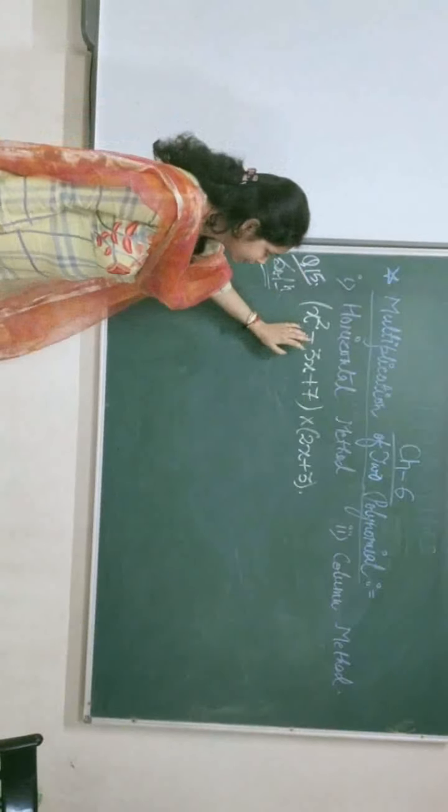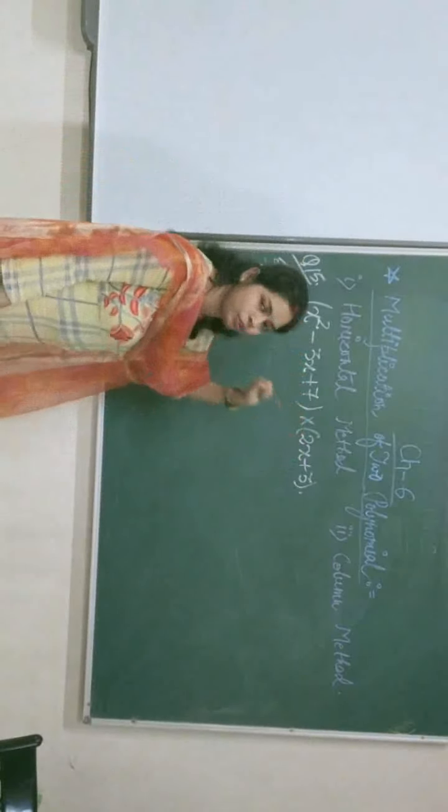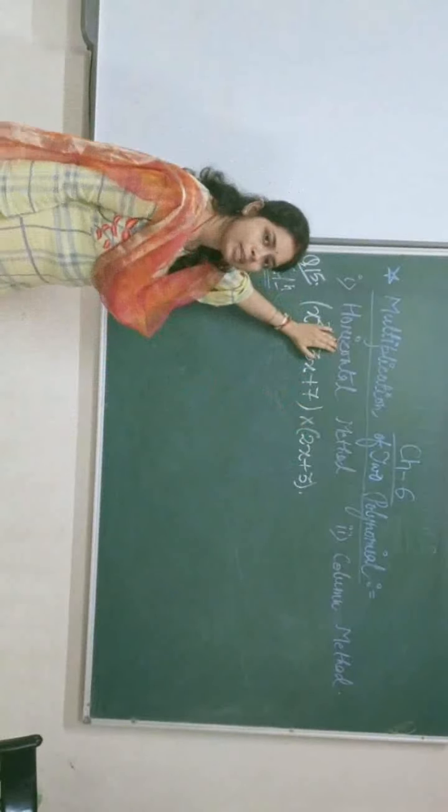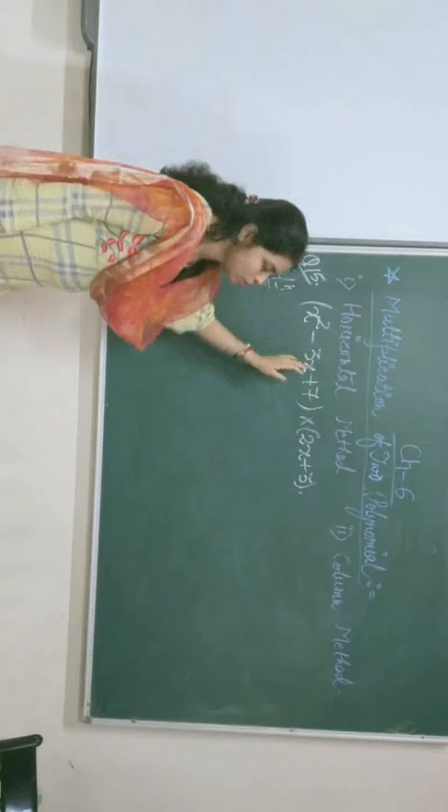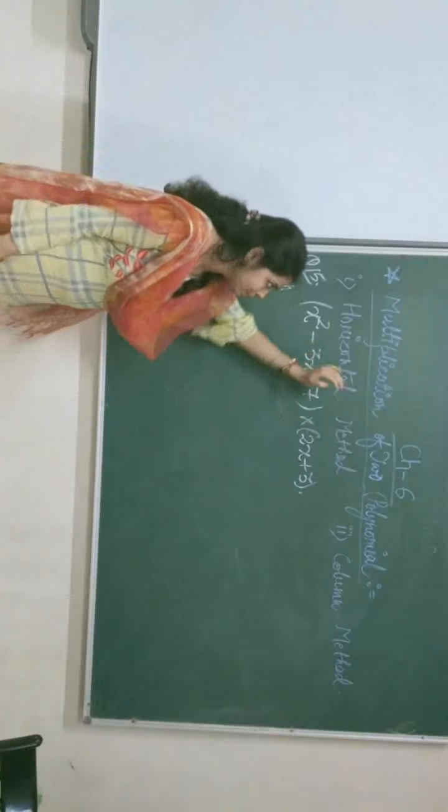In the question, there are two polynomials that are given which are multiplied together. At first, we are going to discuss the horizontal method. How will we solve these polynomials using this method?